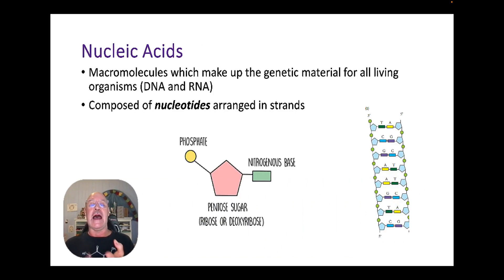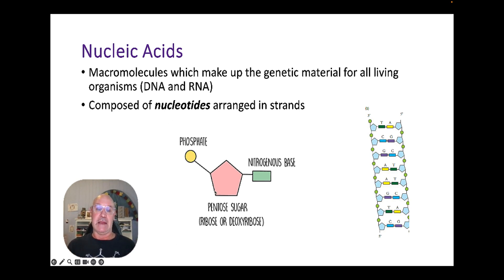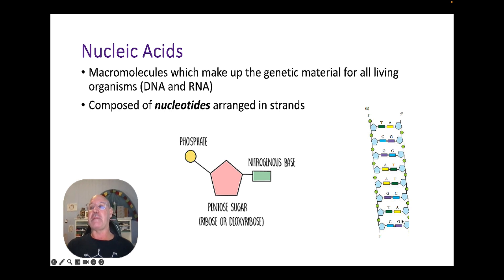DNA and RNA are both nucleic acids. A nucleic acid is a macromolecule — just like a protein is a macromolecule made up of amino acids — but nucleic acids are made up of building blocks called nucleotides. A single nucleotide has three parts: a pentose sugar (either ribose for RNA or deoxyribose for DNA), a phosphate group, and a nitrogenous base. The backbone of the DNA is made up of the repeating sugar and phosphate, with the nitrogenous bases sticking out in the middle.